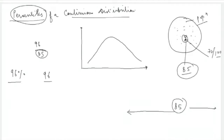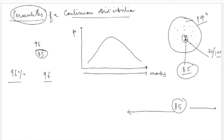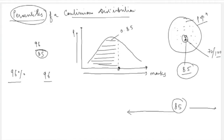In a sense, you can understand percentile as a relative ranking — this student is better than 85 percent of the population. Visually, if we denote marks on the x-axis and probability on the y-axis, the 85th percentile is a point on the x-axis such that the area to the left of this point is 0.85.